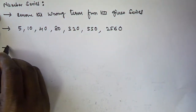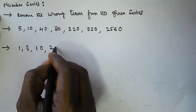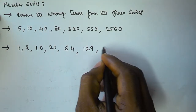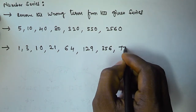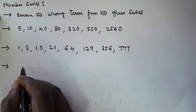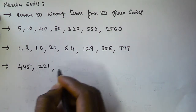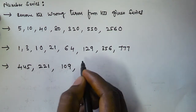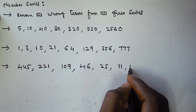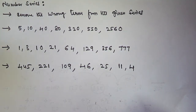The second problem given is 1, 3, 10, 21, 64, 129, 356, 777. And the next problem given is 445, 221, 109, 46, 25, 11, and 4. So these are the 3 problems given.